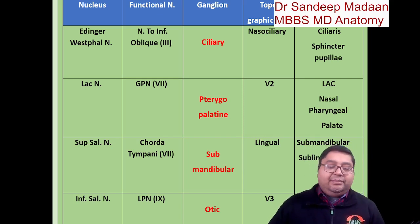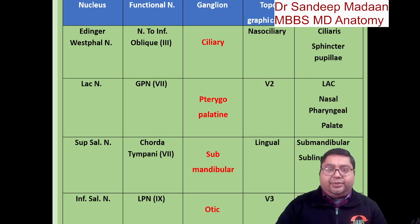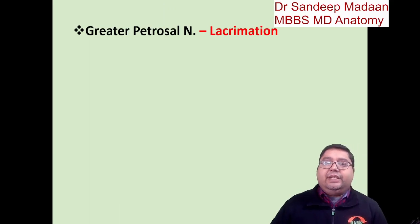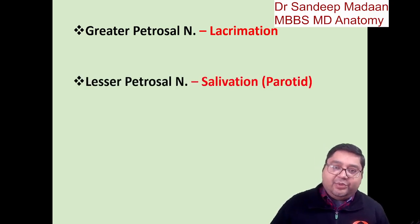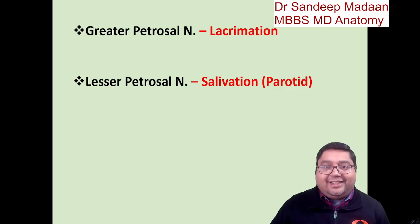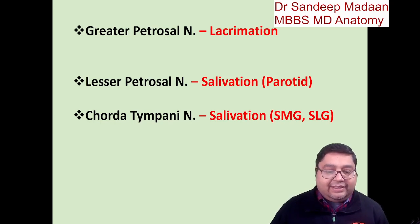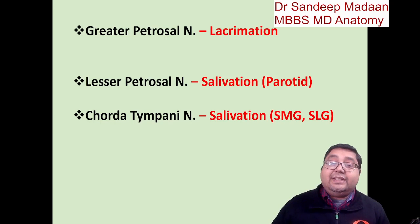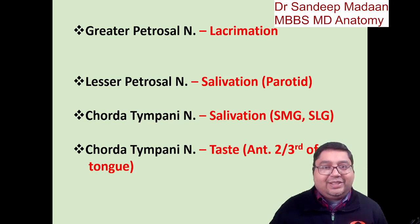To avoid confusion between the greater and lesser petrosal nerves: in simple words, the greater petrosal nerve carries fibers for lacrimation. The lesser petrosal nerve carries fibers for salivation — specifically from the parotid gland. The chorda tympani also carries fibers for salivation, but from the submandibular and sublingual glands. Additionally, the chorda tympani picks up taste sensation from the anterior two-thirds of the tongue.